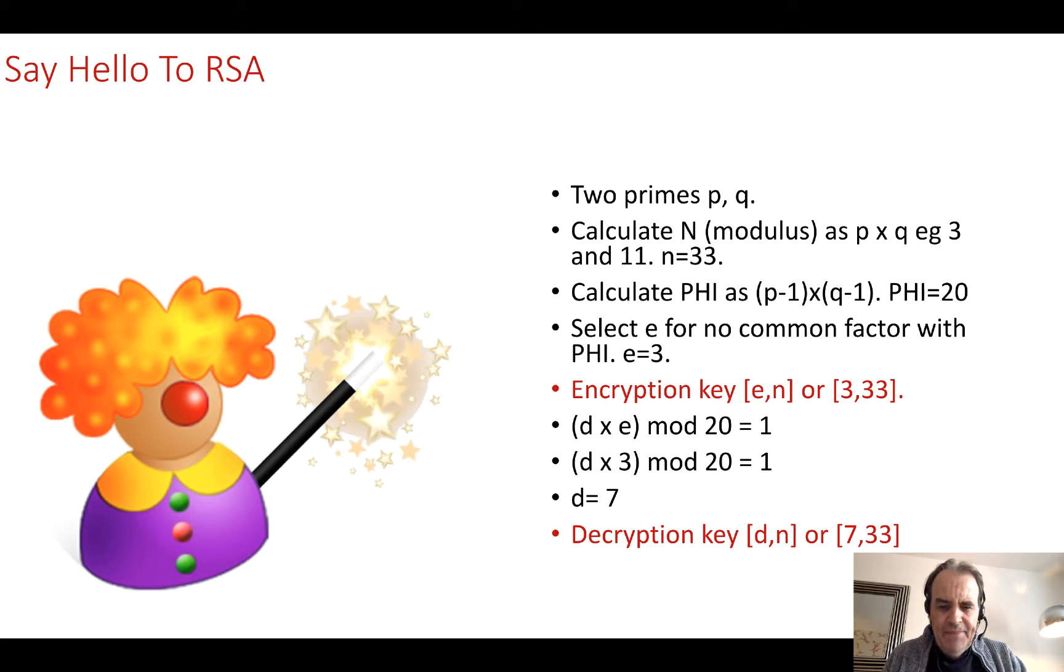Just to recap, we have two prime numbers P and Q. We multiply them together to get the public modulus, in this case 33.